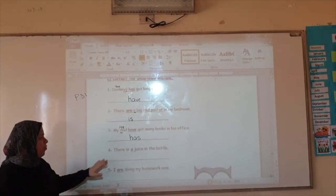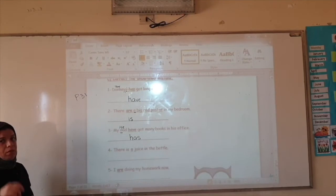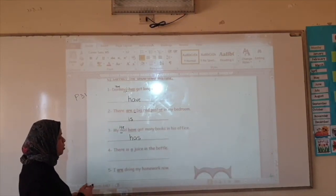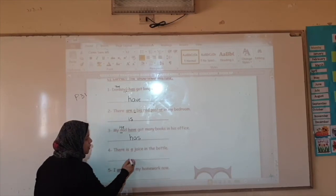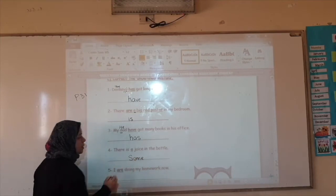Number four. There is a juice in the bottle. Juice. So juice is a liquid. I use what for liquid? Some. I use what for liquid? Some.